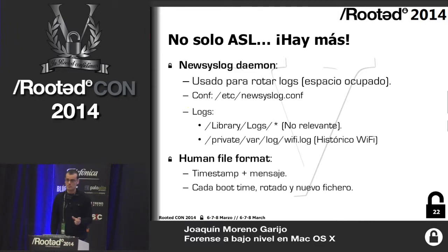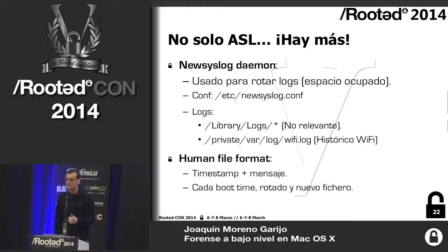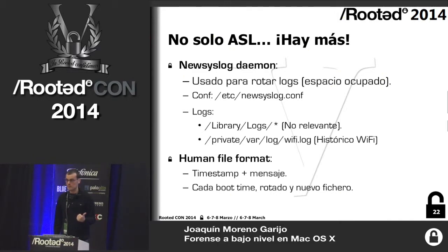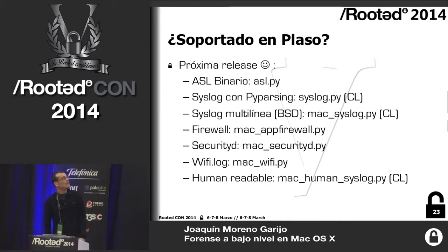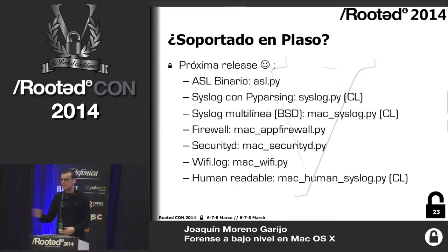WiFi.log is important: it works with a 5 MB rotation limit. The rotation takes one or two months depending on how much you use WiFi. The last format — the himem file format — is a newer format. The application creates the log when it boots, and it is rotated when you boot again. So the log can be there for 10 days without rotation, and it will keep growing in size until you reboot. This is supported in PLASO; once Christian gives the go-ahead, it goes to production and you can download it.